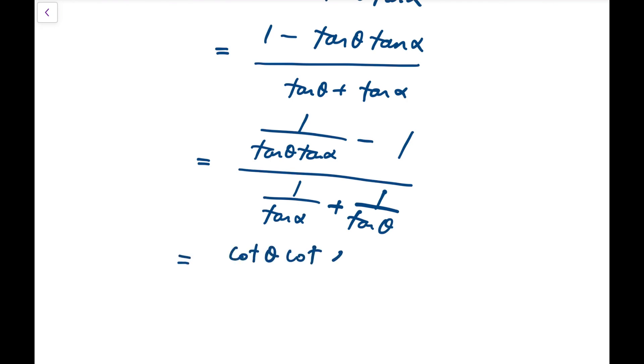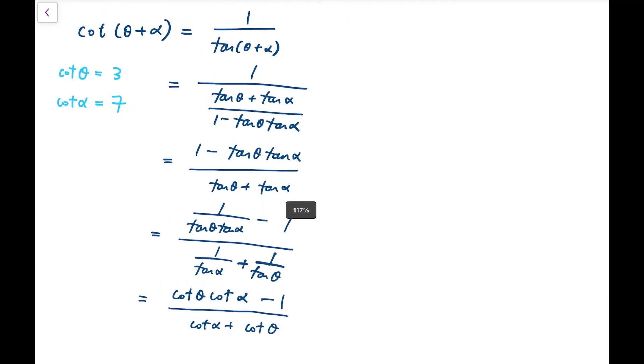That means I'll end up having cotangent theta times cotangent alpha minus 1 over cotangent alpha plus cotangent theta.